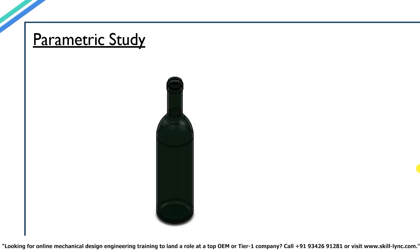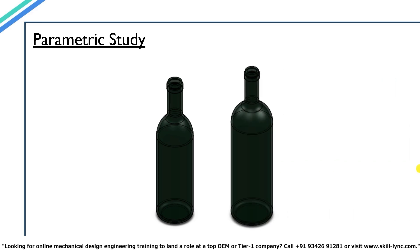Let's assume we have a glass bottle of a certain dimension. The bottle holds say 250 ml of fluid. Now the company manufacturing the bottle wants to increase the total volume to 350 ml, all the while keeping its diameter constant. So instead of running multiple trial and errors, a parametric study can be performed on the bottle. Here we can fix the required parameters like diameter, thickness of the material, shape etc., and vary the total height of the bottle to arrive at the required capacity with minimal changes in dimensions and shape.